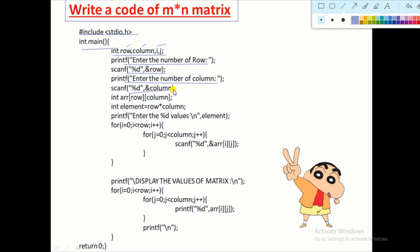I declare here an integer type array with brackets for row and column. I also declare an extra variable called element. Why? Because when we enter the value of all elements, we don't know the amount of variables we have to input. This element variable is used to track the amount of values to input from the user. We calculate element equals row multiplied by column, because the number of elements equals the number of rows times the number of columns.